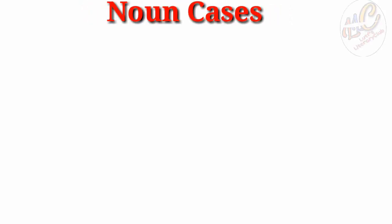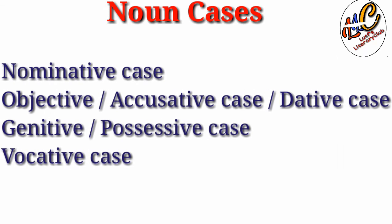Case denotes the position of a noun in a sentence. Cases are of four kinds: nominative case, which is also called subjective case; second, objective case; third, possessive or genitive case; and fourth, vocative case.